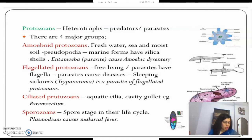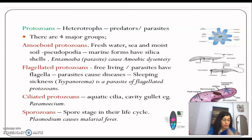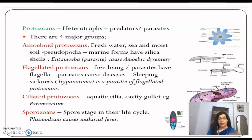In suitable conditions, slime molds form an aggregation called plasmodium, which may grow and spread over several feet. Under unfavorable conditions, plasmodium differentiates into fruiting bodies. Spores are exposed at their tips with resistant walls, allowing them to survive for many years until adverse conditions are over.